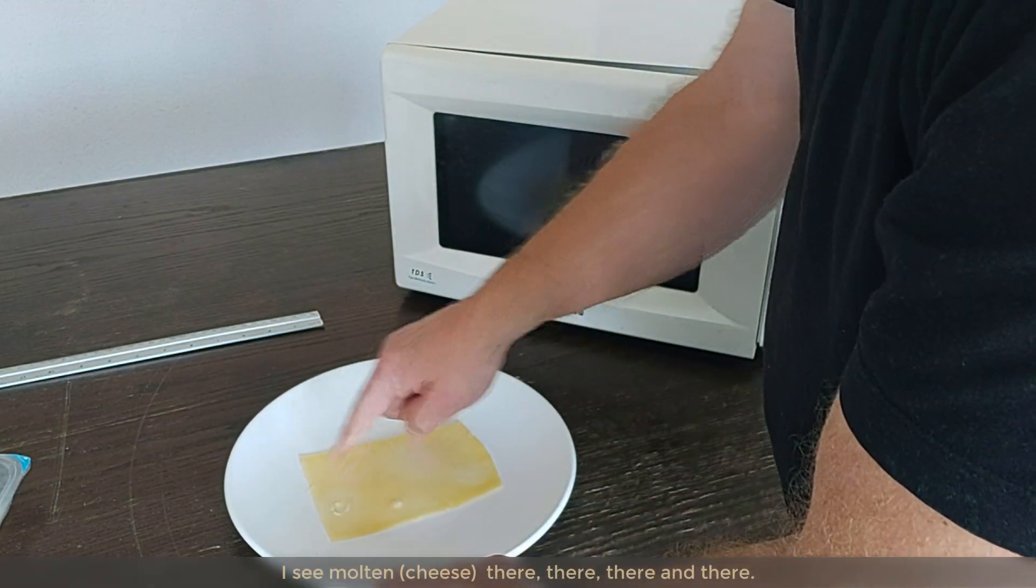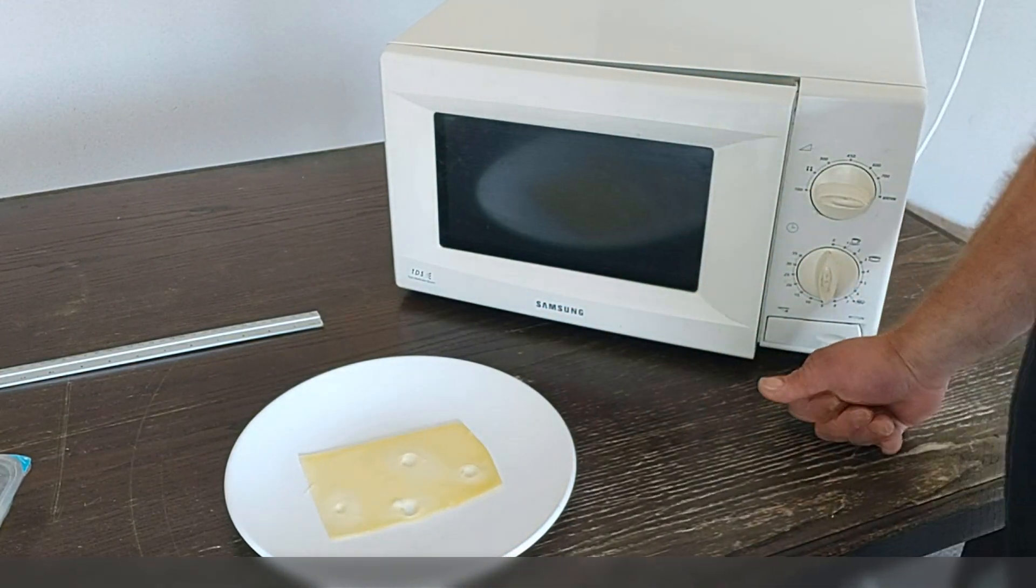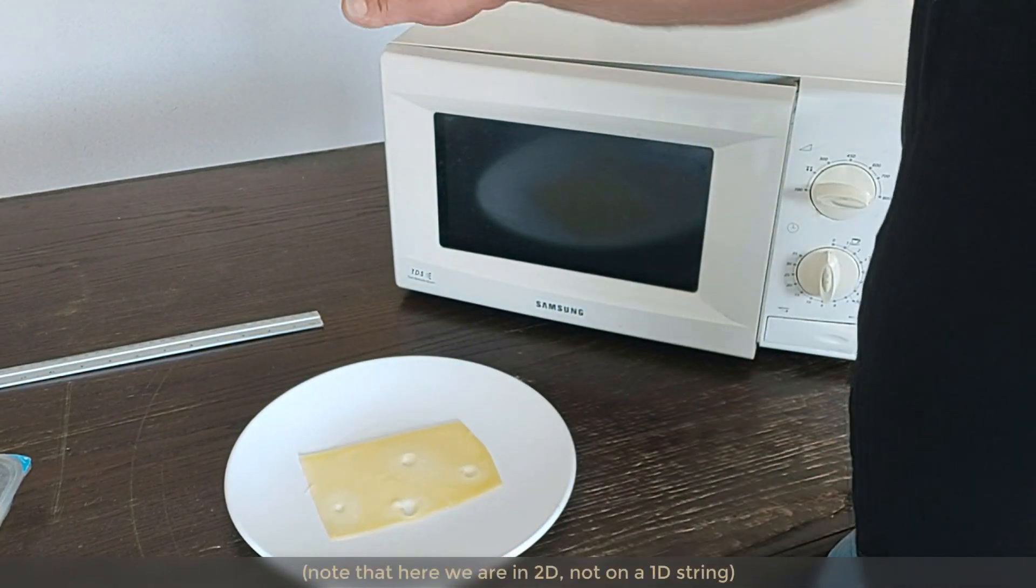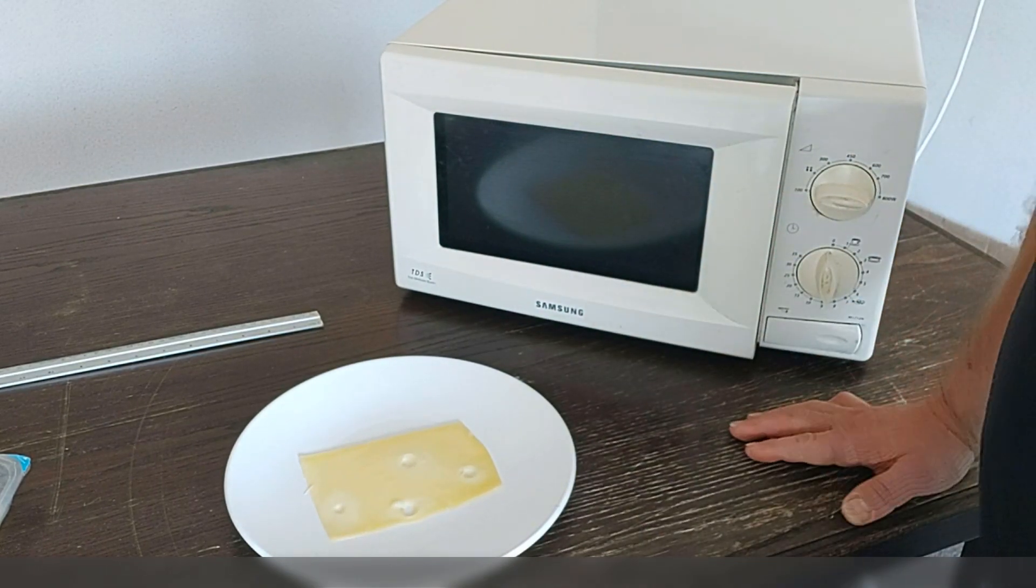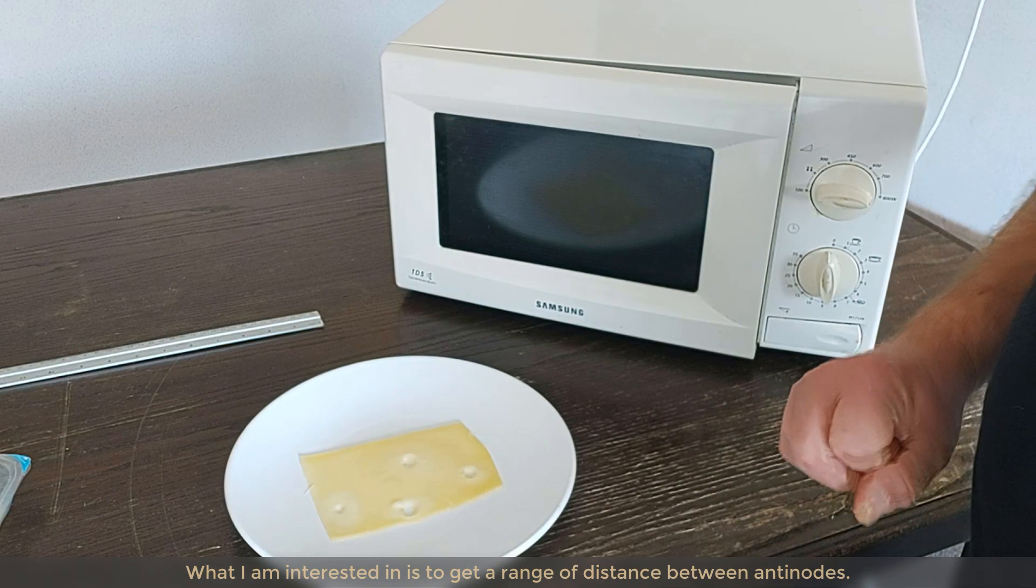Let's have a look. Now, I see molten here, molten there, molten there, molten there. So, most probably, these are anti-nodes. Remember, here in 2D, we're not on a single string. What I'm interested in is to have a range of the distance between the anti-nodes.